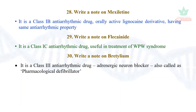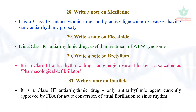Bretylium is a Class 3 anti-arrhythmic drug and an adrenergic neuron blocker, also called a pharmacological defibrillator. Ibutilide is a Class 3 anti-arrhythmic drug and is the only anti-arrhythmic drug currently approved for conversion of atrial fibrillation to sinus rhythm.